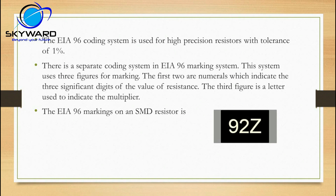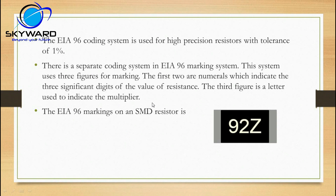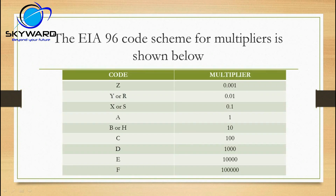Now the EIA-96 coding system. For example, 92Z — what is the meaning of Z and 92 in EIA-96? This system uses three figures for marking. The first two are numerical, which indicate three significant digits of the resistor value. The third figure is a letter used to indicate the multiplier.